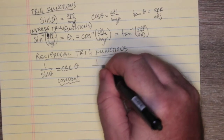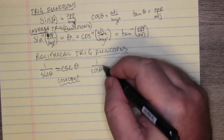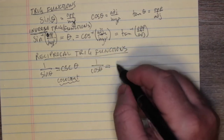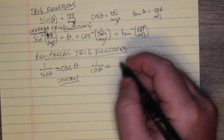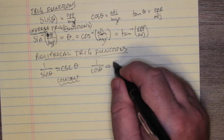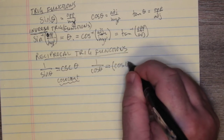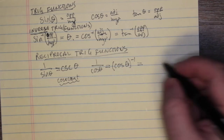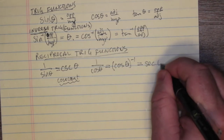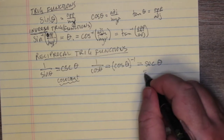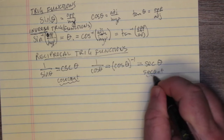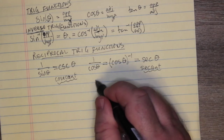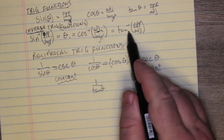One over cosine — again, that's not an exponent. If you really do want to use minus one as an exponent, put cos theta in brackets to the minus one. What you get from one over cosine is secant theta, expressed as sec theta and spelled out as secant.